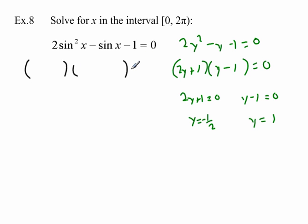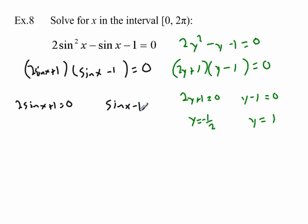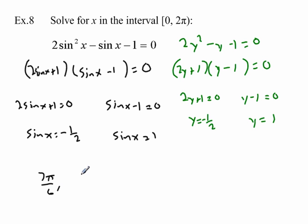We apply the same factoring to the trig expression, setting it equal to 0: (2sin(x) + 1)(sin(x) - 1) = 0. Setting each factor to 0: 2sin(x) + 1 = 0 gives sin(x) = -1/2; sin(x) - 1 = 0 gives sin(x) = 1. On the unit circle, sin(x) = -1/2 at 7π/6 and 11π/6; sin(x) = 1 at just π/2. So x can be any of those three values.